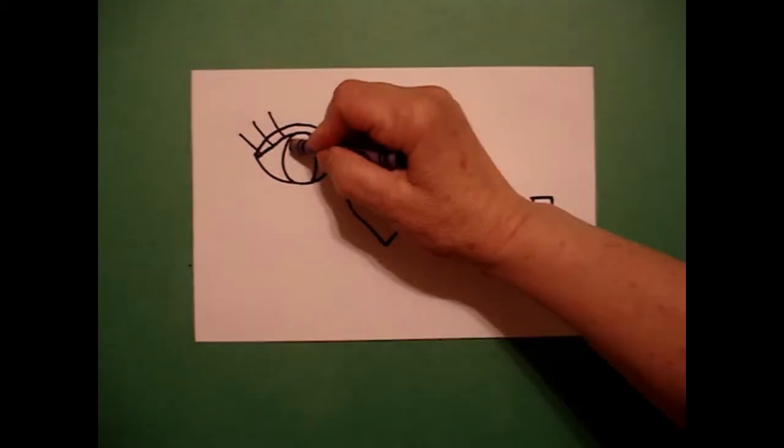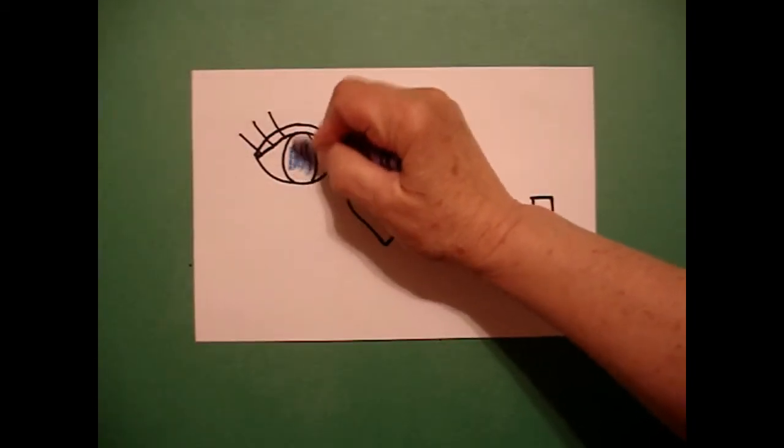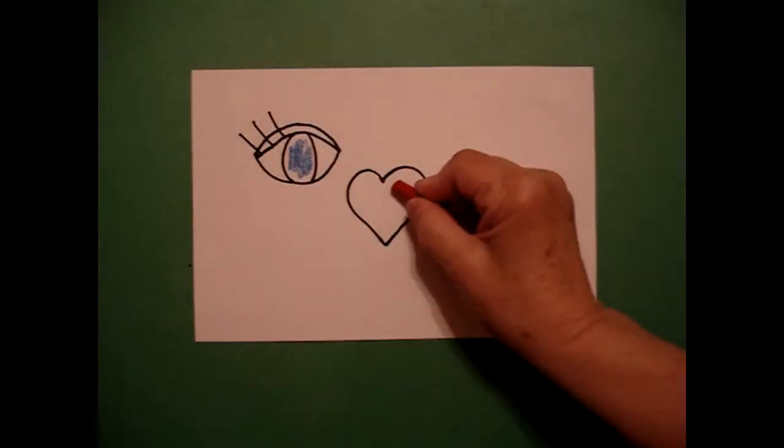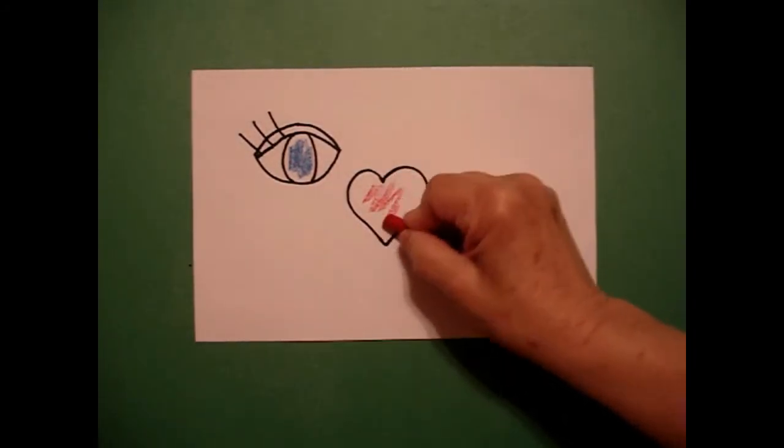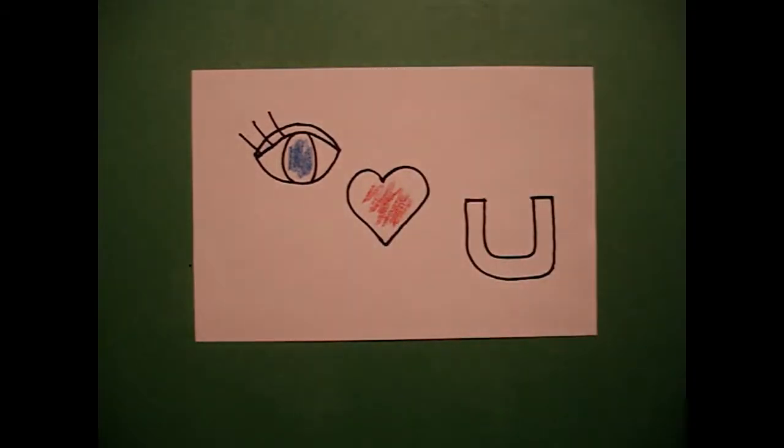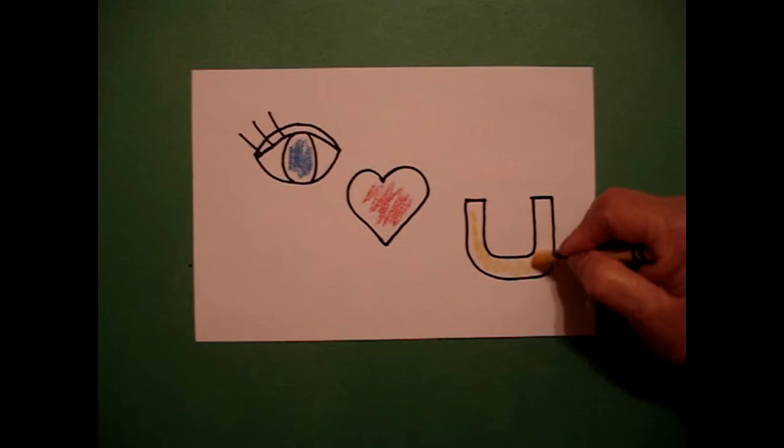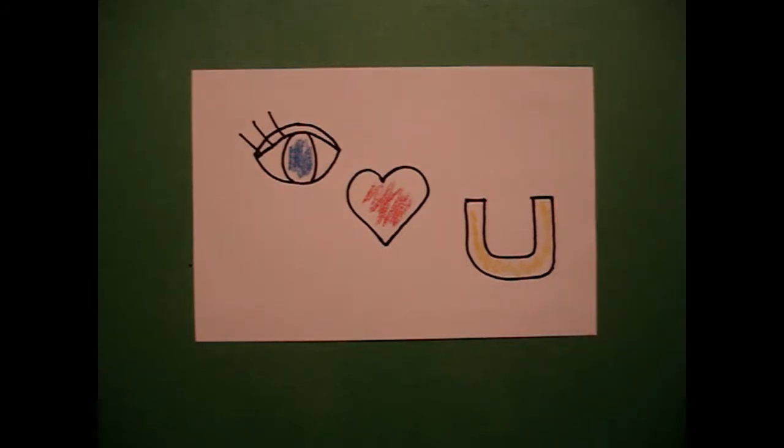To color this in, I'm just going to use my primary colors. So I'm going to color the inside of my eye blue. I'm going to color my heart red. And I'm going to color my letter U yellow. Real easy. Let's see what it looks like all colored in.